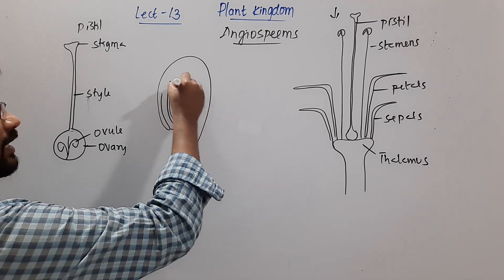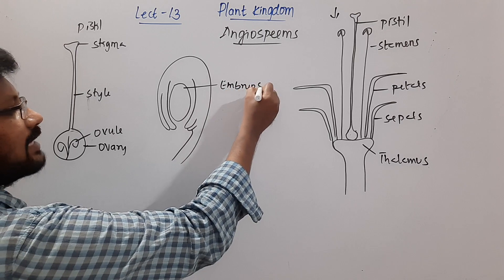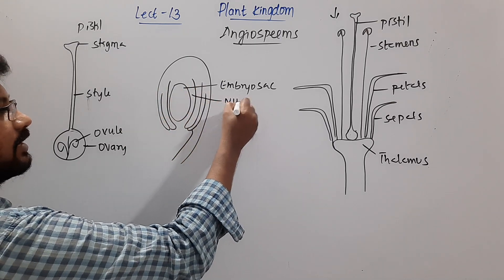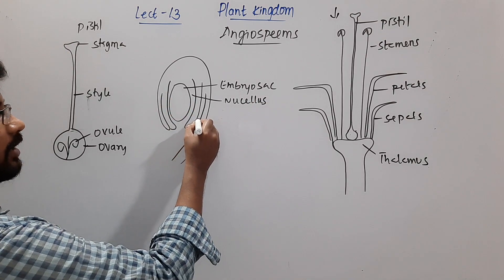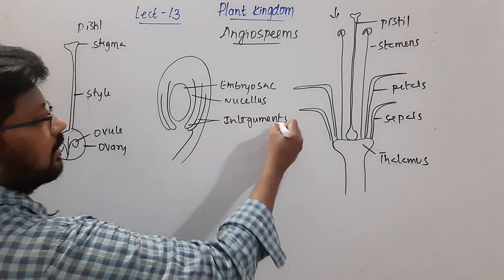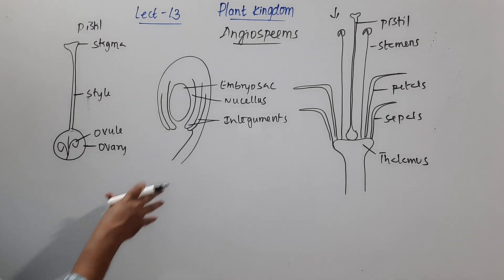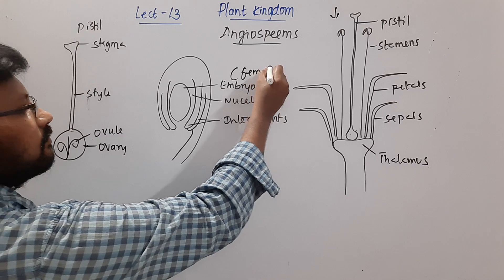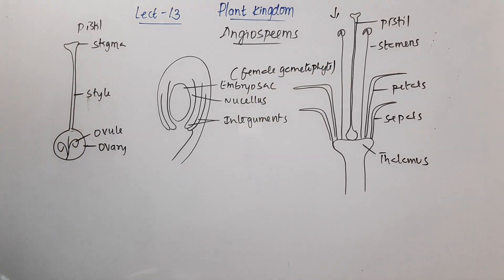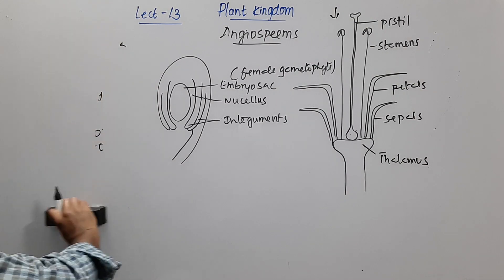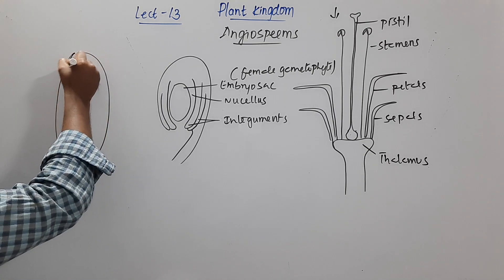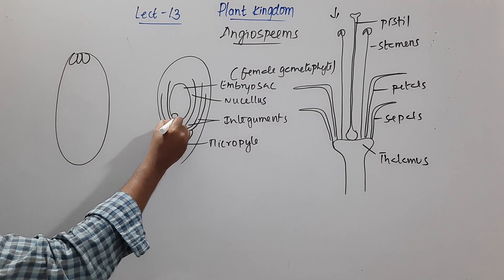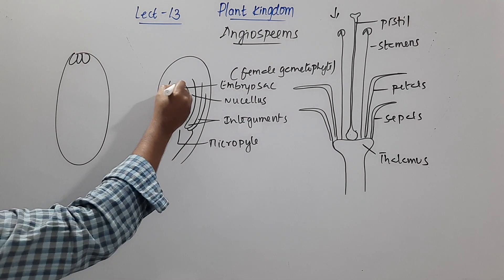Inside the ovule we find the embryo sac. Surrounding the embryo sac is a tissue called the nucellus, and all of that is covered by integuments. The embryo sac is the female gametophyte. This opening toward the embryo sac is called the micropyle, and the egg cell is always present toward the micropyle end.